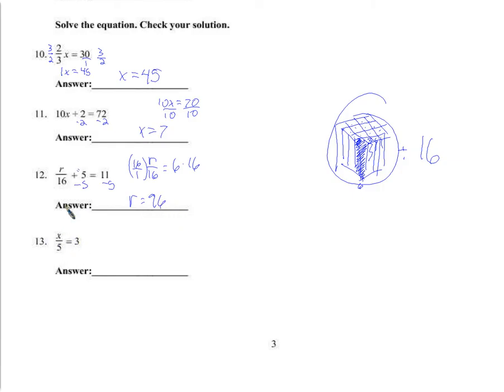Same thing here, just a little simpler — without subtracting 5 first. You multiply by 5 on both sides and x is equal to 15.